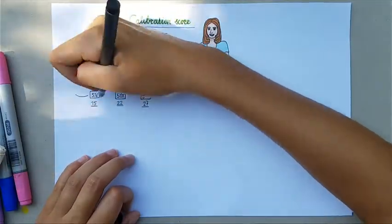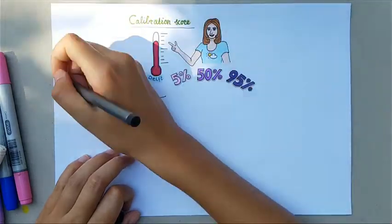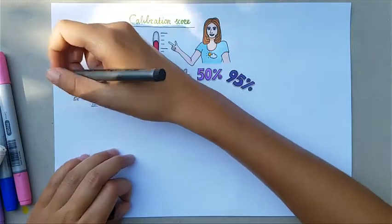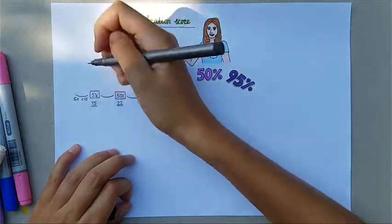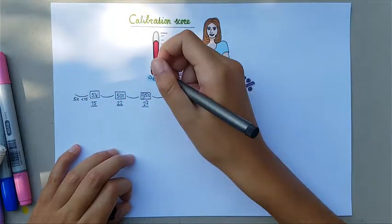With a 5% quantile of 15, she is assessing a lower bound, so that she believes there is a 5% chance that the true maximum temperature tomorrow is lower than 15.